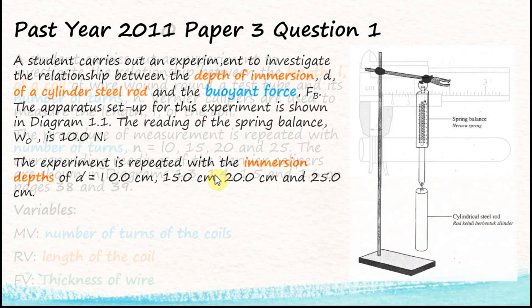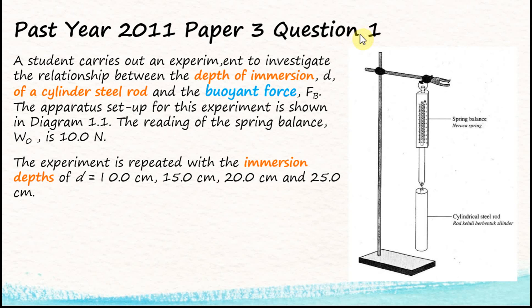Let's look at one more question. This is past year 2011 Paper 3 Question 1. A student carries out an experiment to investigate the relationship between the depth of immersion d of a cylindrical steel rod and the buoyant force Fb. The spring balance reading W0 is 10 newtons. The experiment is repeated with immersion depths d of 10, 15, 20, and 25 — something controlled by the student — so the depth of immersion is the manipulated variable.